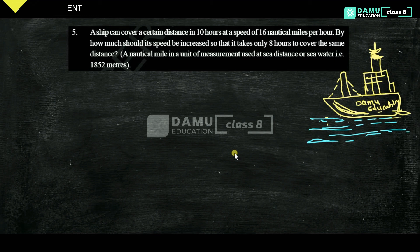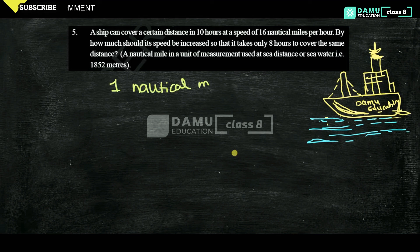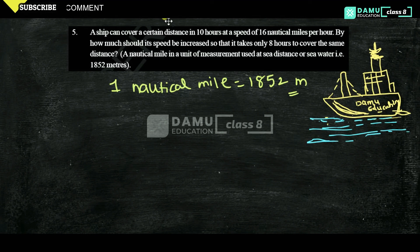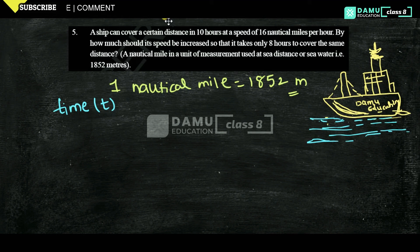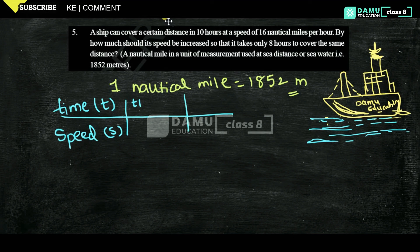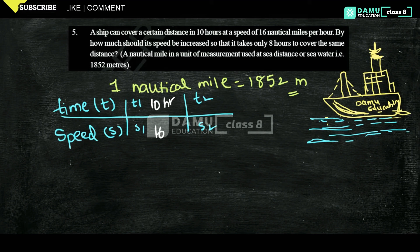A nautical mile is a unit of measurement used to measure distance over sea or water. One nautical mile equals 1852 meters. So let's take time T and speed at 16 nautical miles per hour. We'll use T1 and T2, S1 and S2. So T1, the time taken, is 10 hours, and S1, the speed, is 16 nautical miles per hour.